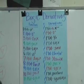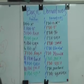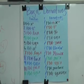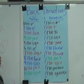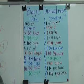f(x) equals sine x and f'(x) equals cosine x. f(x) equals cosine x and f'(x) equals negative sine x.